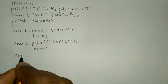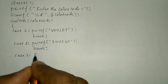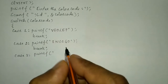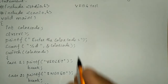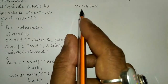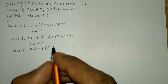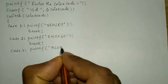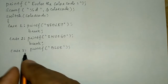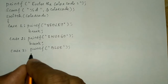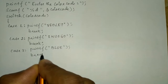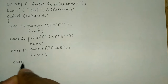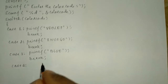Next is case three. Again we'll write a printf statement. After indigo, the next color is blue. In double quotation marks write 'blue', end the double quotation mark, and put a semicolon. Now write the break statement, and once again write case number four.